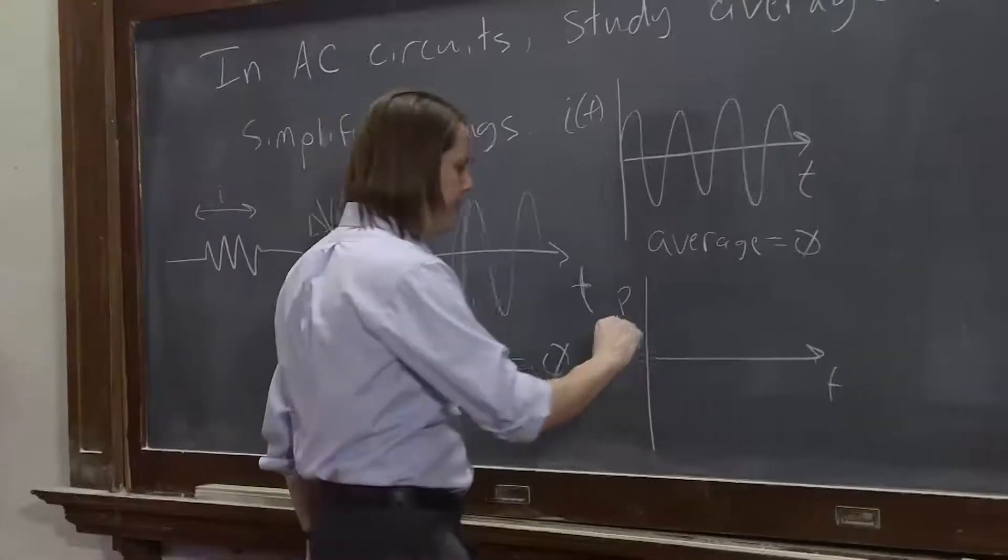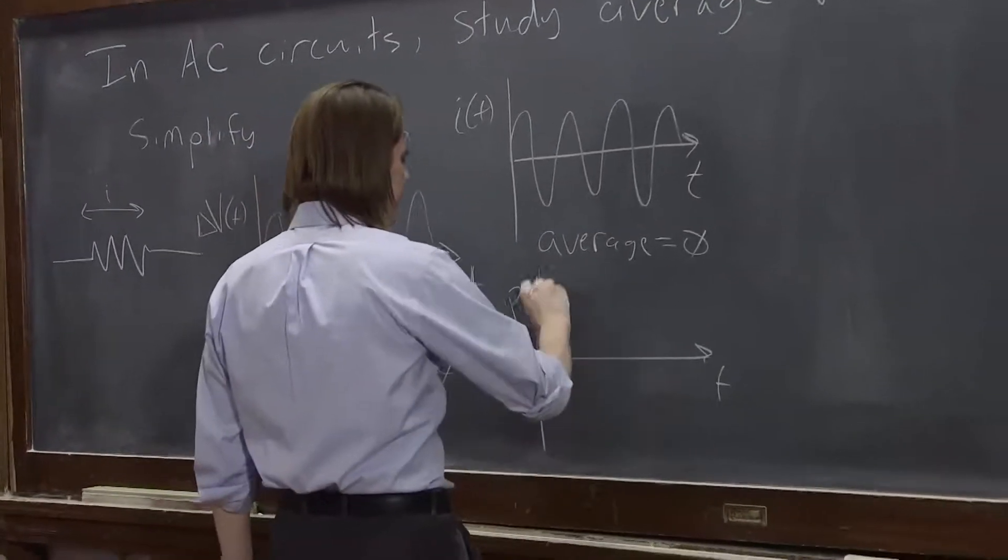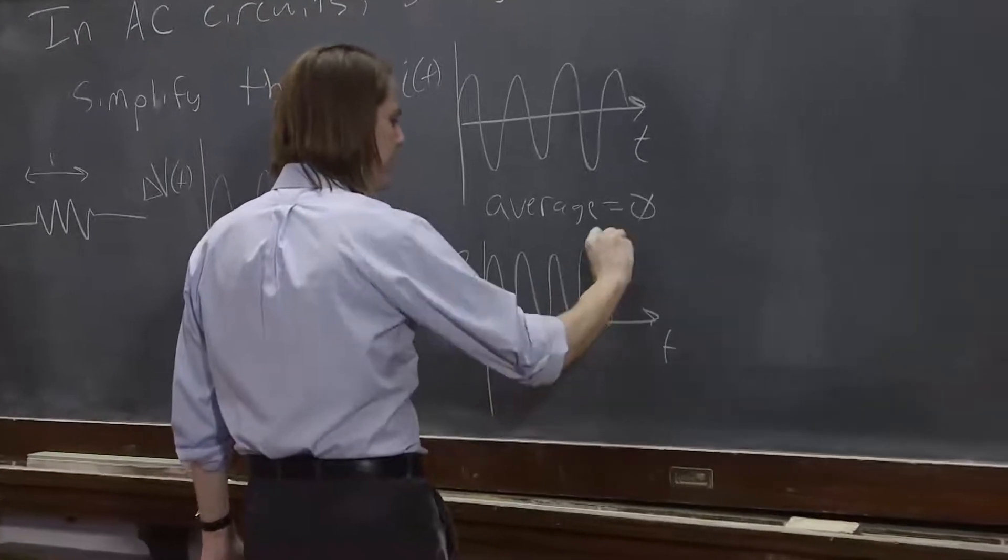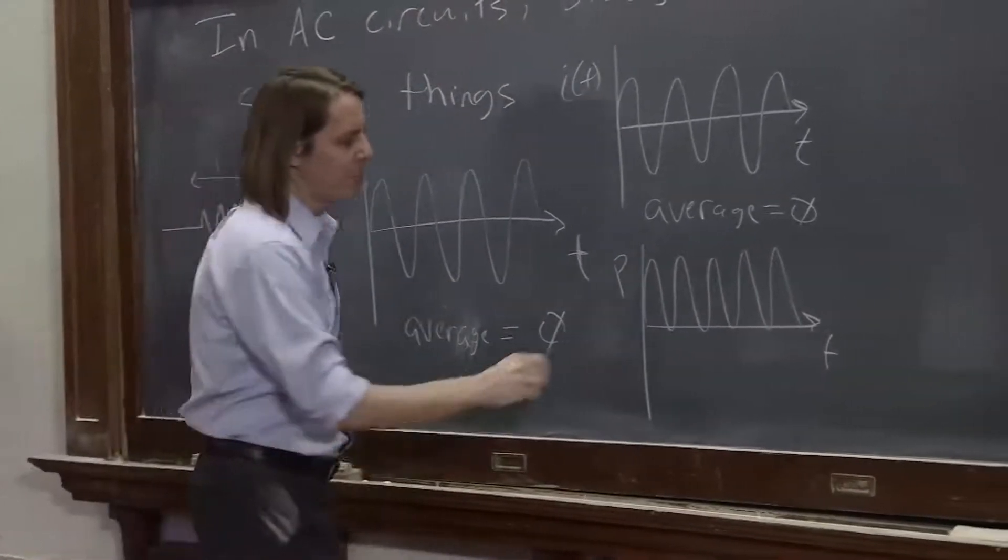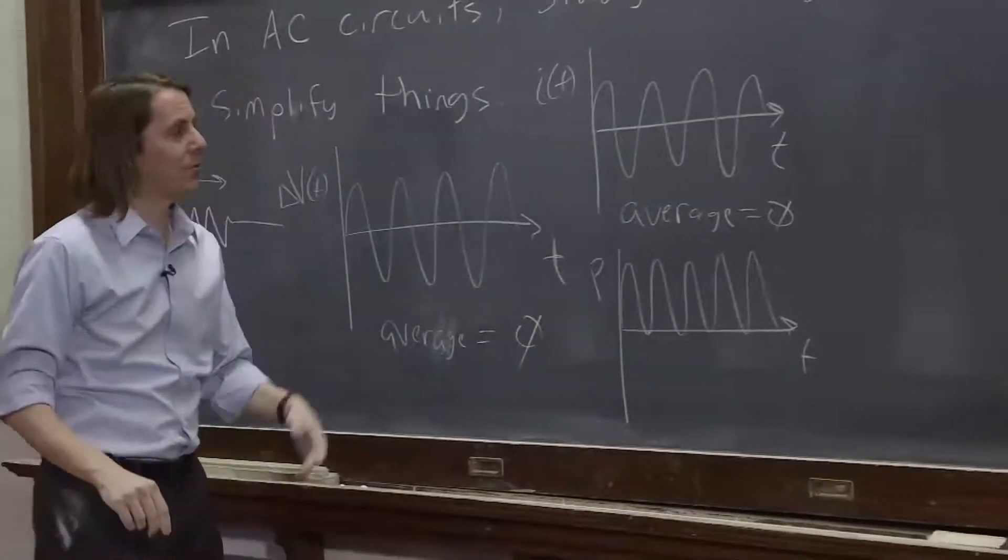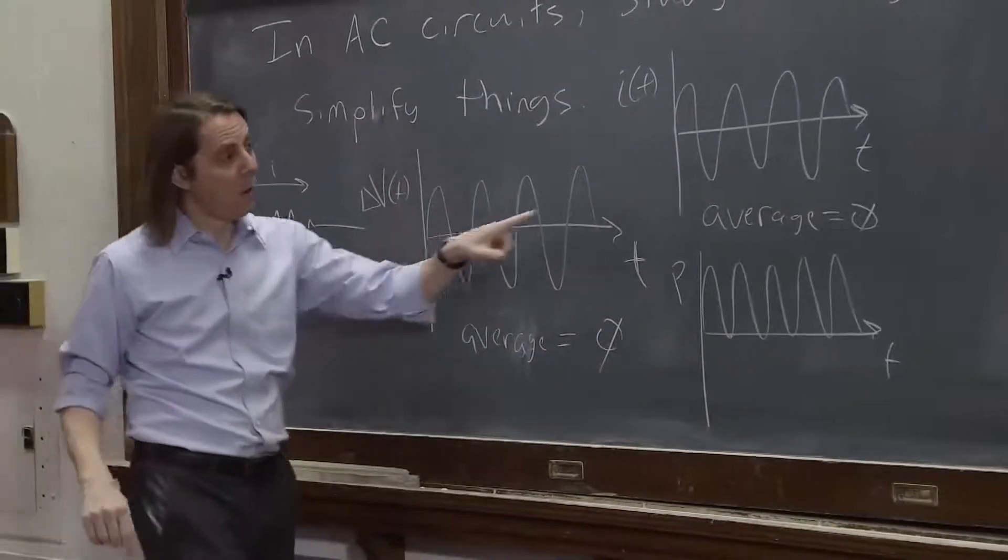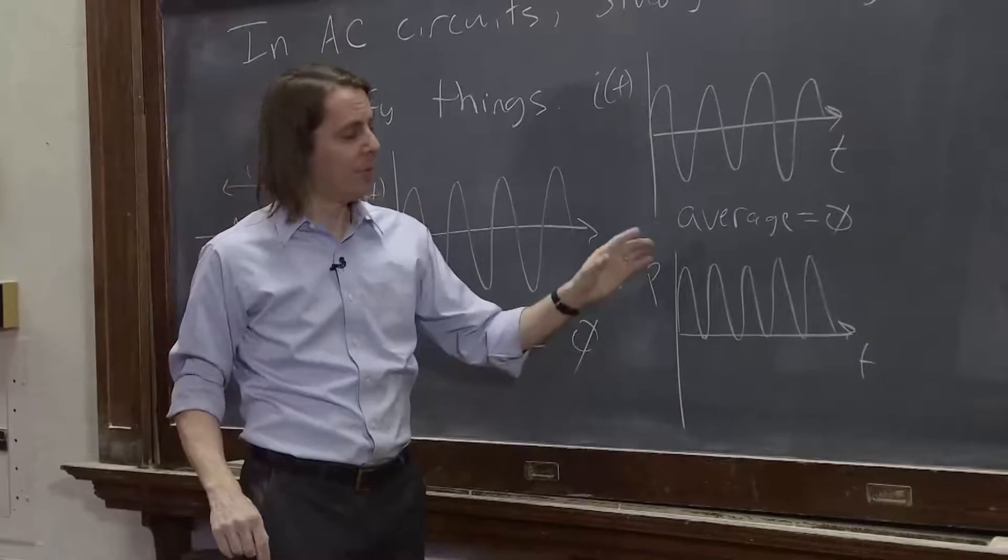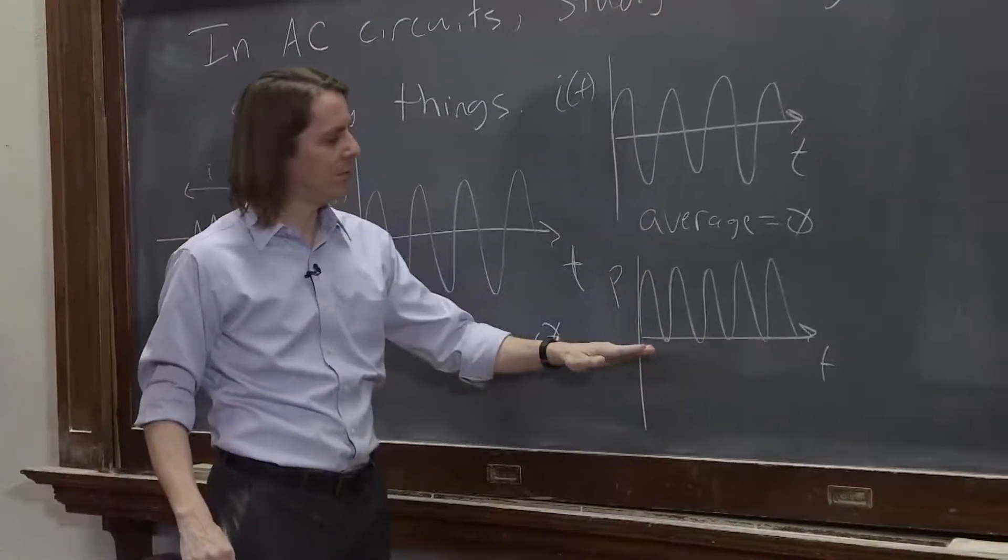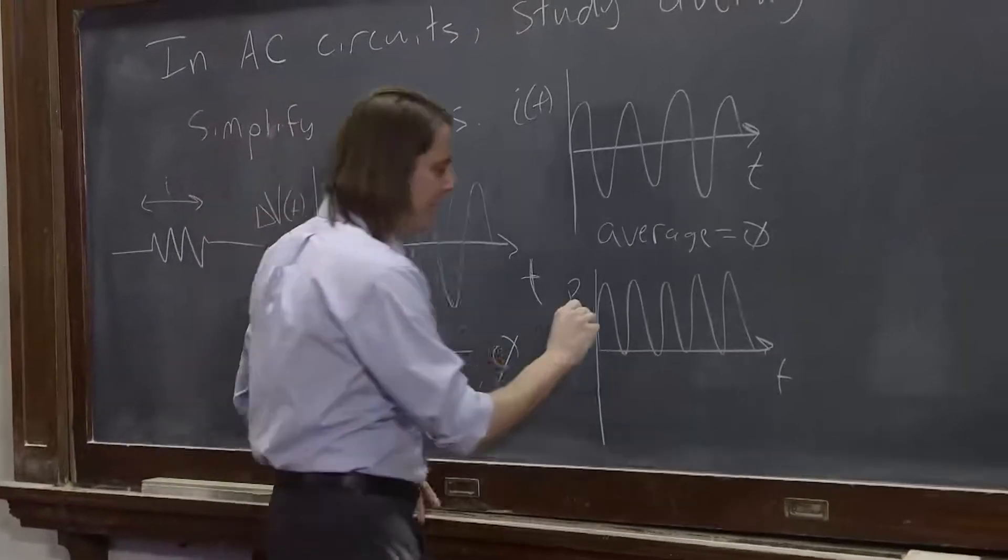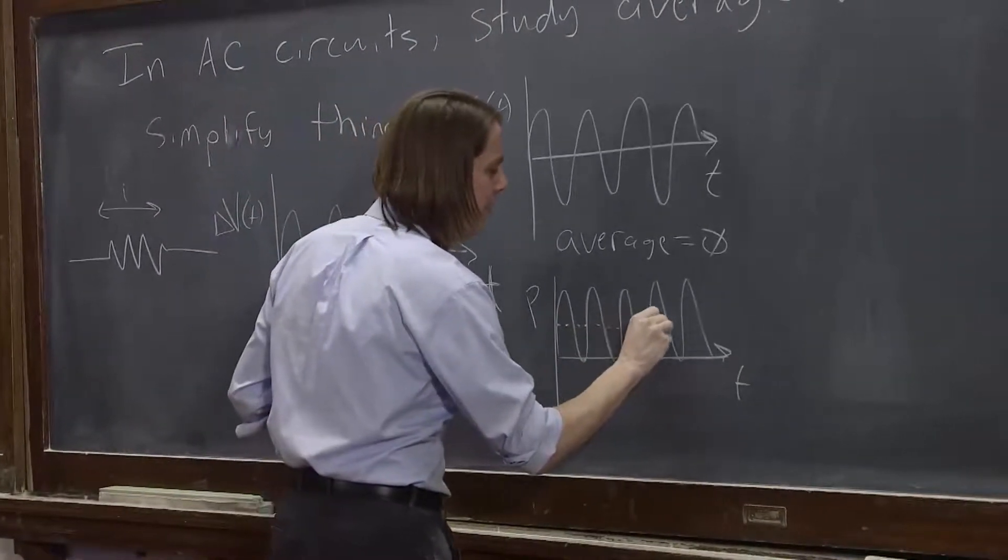So if we plot the power, it will be something like this. It'll be a sinusoid, a squared sinusoid, that's always positive. There are moments where the power is zero, just like there are moments when the current doesn't flow here. The power does hit zero, but it never goes negative. It's always positive.